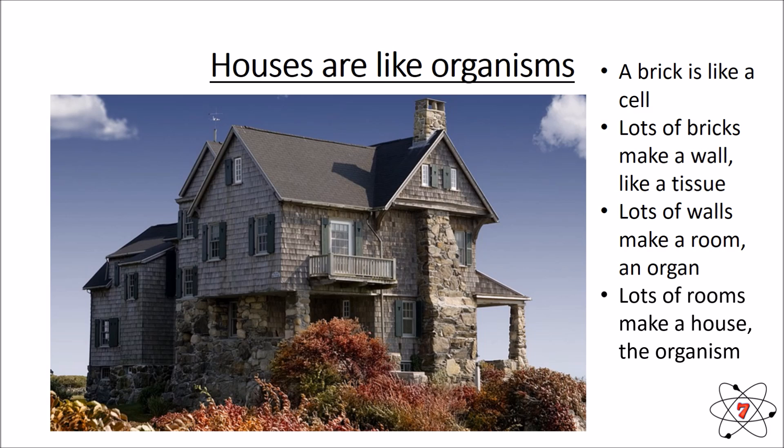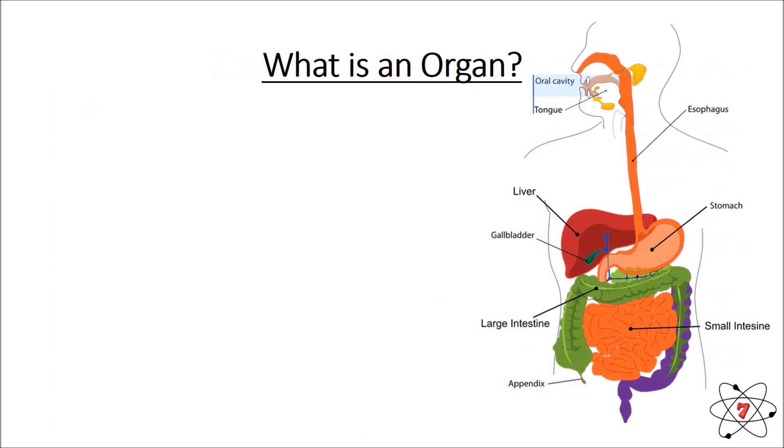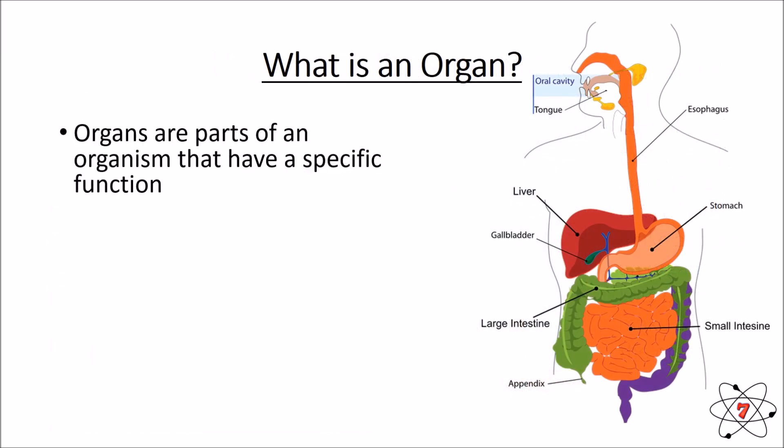There's another way your house is like an organism: you might have three bedrooms, and that is like an organ system. All of the bedrooms do the same thing. Within your body, you have organ systems where multiple organs all work together to do the same thing — to enable a process such as digestion.